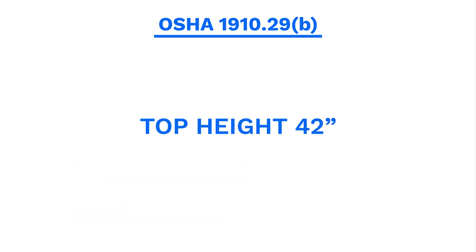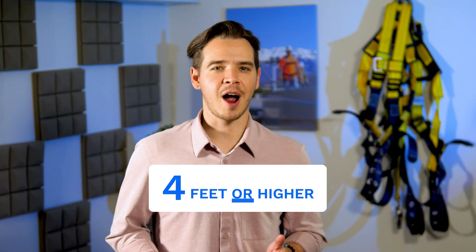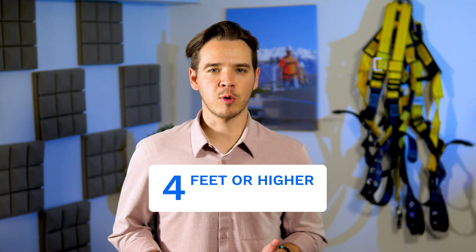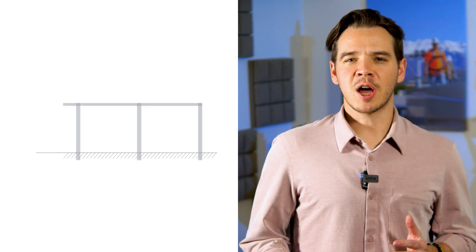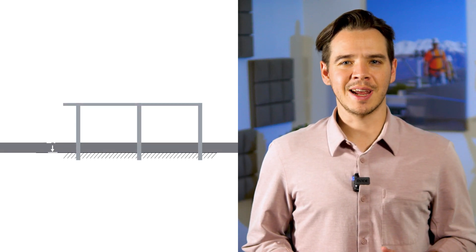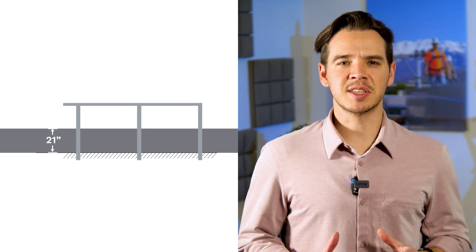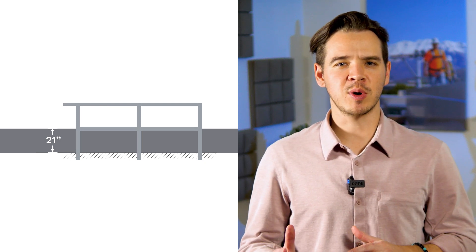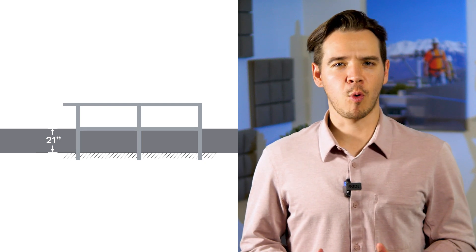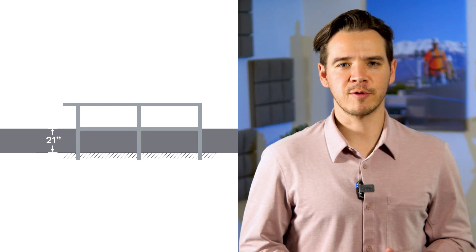The top edge height can be more than 45 inches as long as the guardrail system meets all the other criteria. Guardrail is required for any platform four feet or higher above a lower floor or the ground. If there's not a wall or parapet at least 21 inches high, then mid rail should be installed halfway between the top edge of the guardrail and the walking working surface.